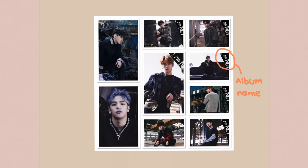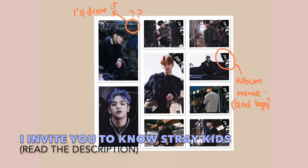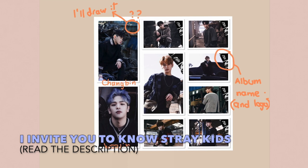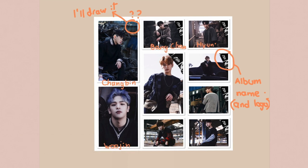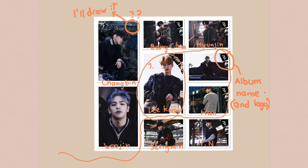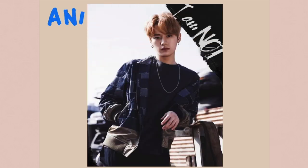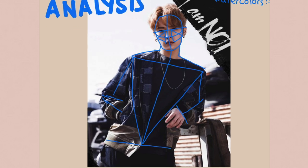Here you can see the nine photos — there's the album name and logo on some, and on others there's not, but I'm going to draw it nevertheless, it seems really cool. You can see the member names too. If you want to know more about Treykits in general, you can read the description. I'm going to draw Lino first — here you can see him a little bigger — and I'm going to make an analysis of what I'm drawing.